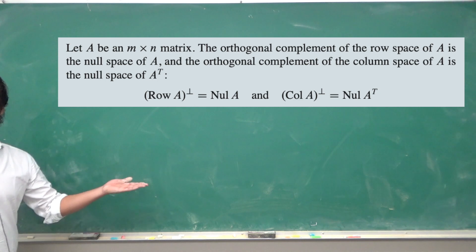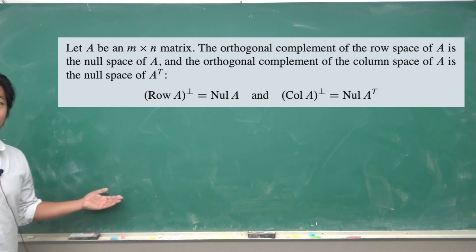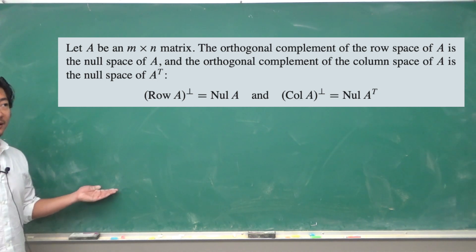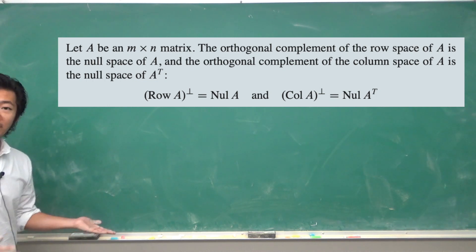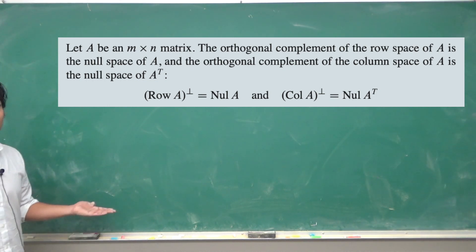Given a matrix A, the row space of A is the vector space spanned by the rows of A, and the orthogonal complement of the row space is the null space of A, and the orthogonal complement of the column space is the null space of A transpose.